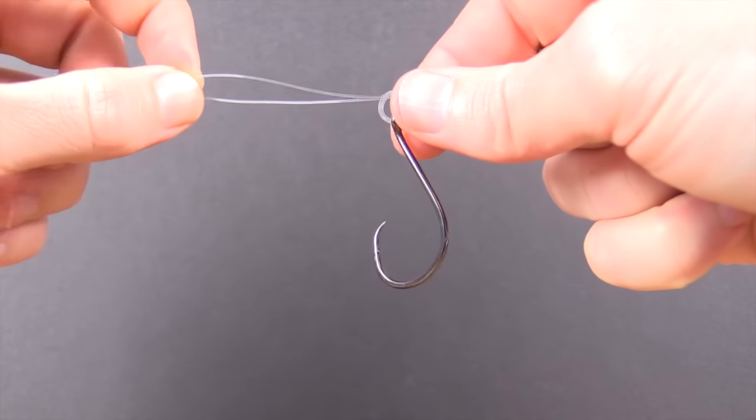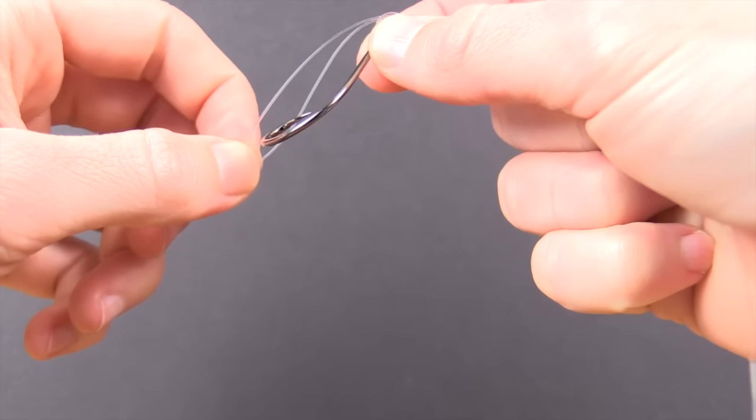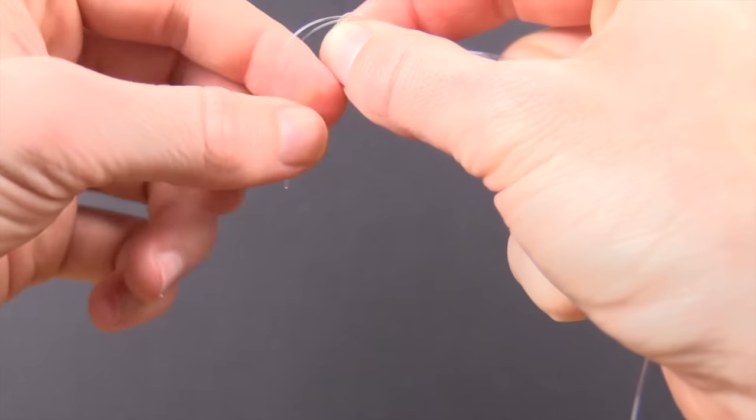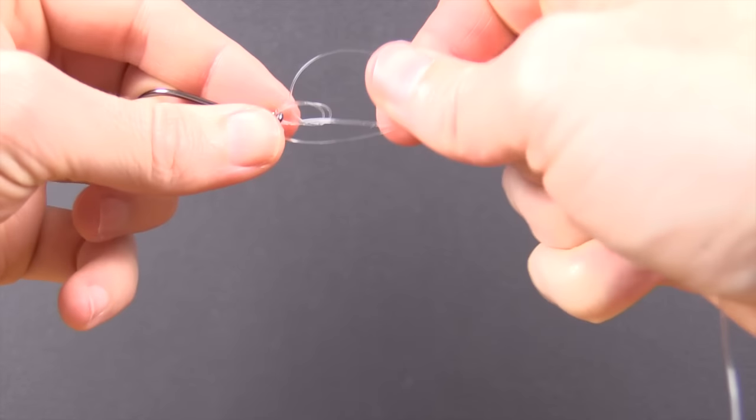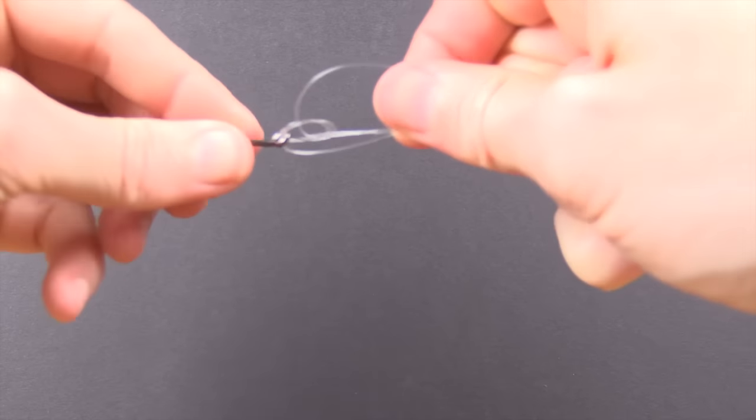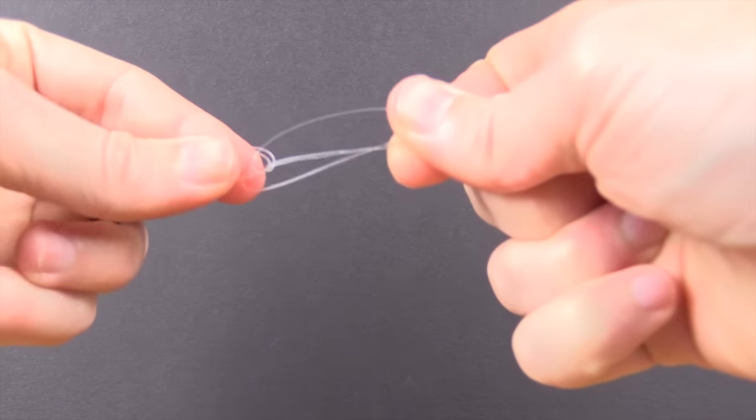The reason why we have the tag end a fairly good size is that we have to put the hook through it. This could be problematic if you're using a big lure. That's the only bad part about this knot. With a big lure it's tough, but with a bare hook it's very easy.